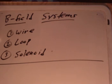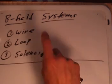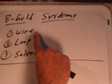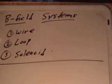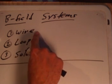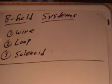In this video, we'd like to talk about what we'd call B-field systems, or magnetic field systems. These are systems made out of wire carrying current, and so they generate magnetic fields. The first one is just a straight piece of wire, covered in a previous video involving the Biot-Savart Law. Then we'll move on to a loop of wire that carries current, and the last system we'll look at is the solenoid.